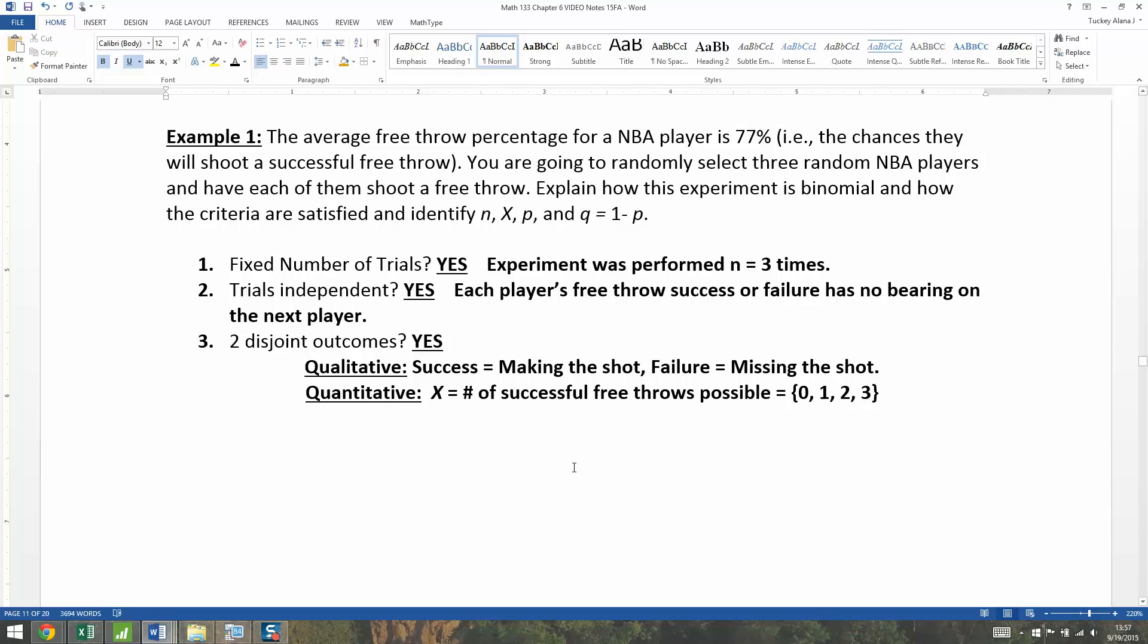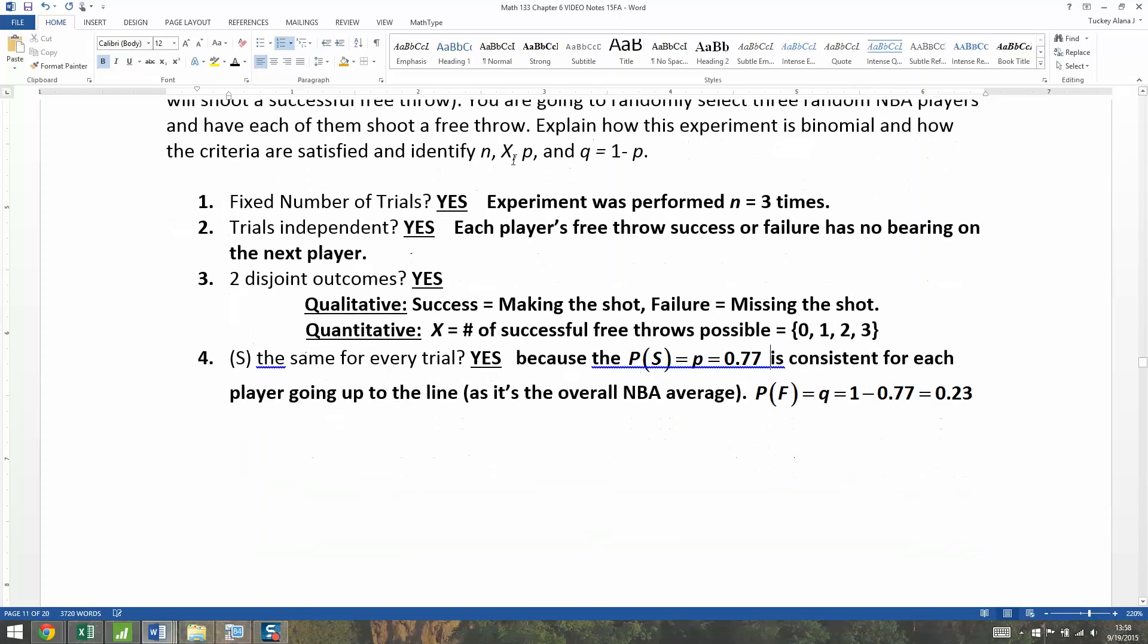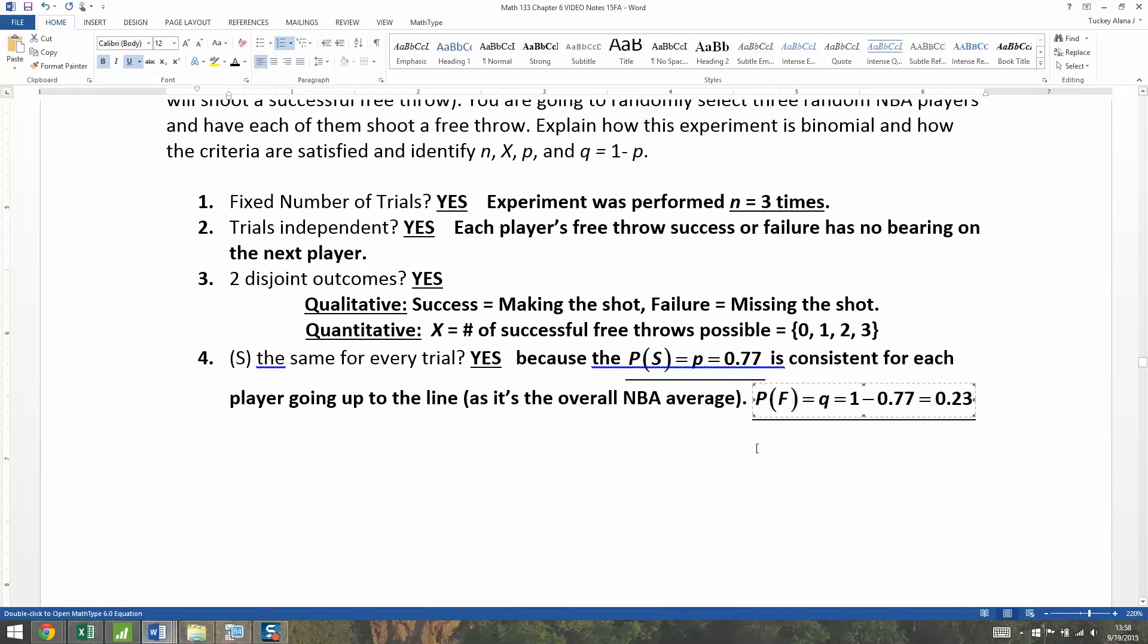The qualitative success fail, and then you convert it to the quantitative number: how many successes will there be? You can have as low as zero, always at zero, all the way up to whatever n is. And n for us was three. Now the last part: will the probability of success be the same for every trial? Sure, absolutely. The probability of success is 0.77, and that's consistent for each player going up to the line as it's the overall NBA average. And that also means the probability of failure is 0.23. Now we were asked in this problem to find n, p, x, and q. Here's n right here, here's p, here's q which is one minus p. And then x is actually all of this—both the words, the number of successful throws, and then it's the numbers: 0, 1, 2, and 3.